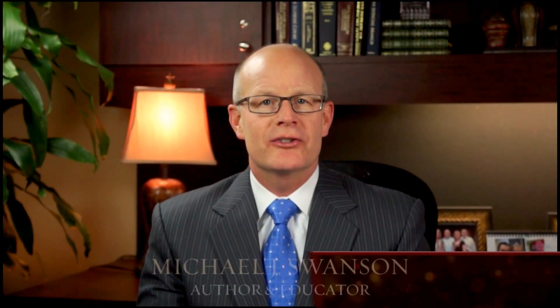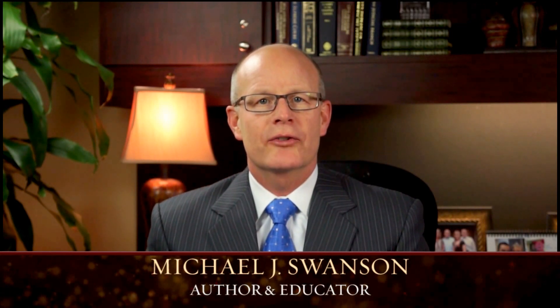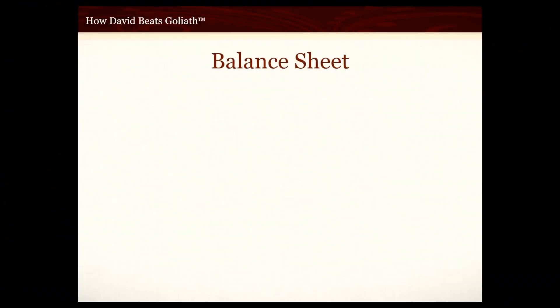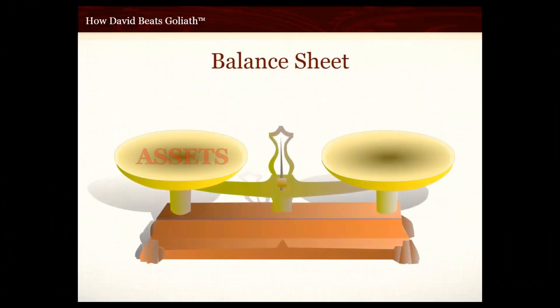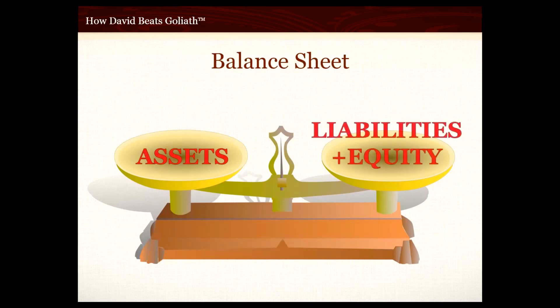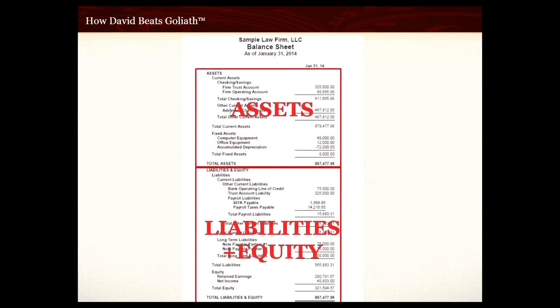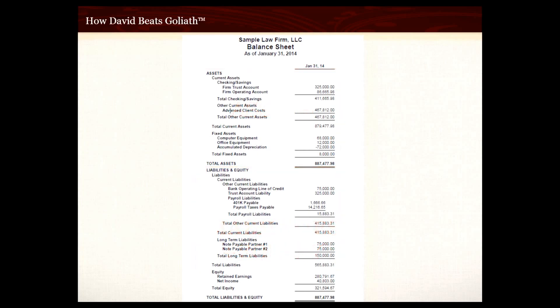Welcome to part two of 'What is a Balance Sheet.' Last time we looked at the basic structure and components of a balance sheet. Today we're going to get into more detail and look at an actual example. To briefly recap: on a balance sheet, assets must balance or be equal to the sum of the liabilities and equity — assets equal liabilities plus equity. The liabilities and equity are what fund or support the value of the assets.